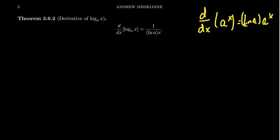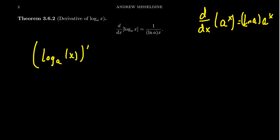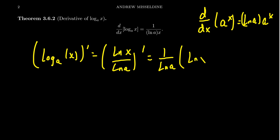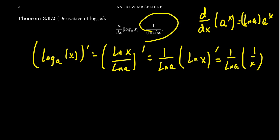We could mimic the implicit differentiation proof we saw a moment ago, but there's an even easier argument using the change of base formula. If I want to take the derivative of log base a of x, I can use the change of base formula: log base a of x equals the natural log of x divided by the natural log of a. The natural log of a is a constant, so we factor it out of the derivative. We just compute the derivative of the natural log of x, which is 1 over x, giving us 1 over the natural log of a times 1 over x — exactly the formula we expected.